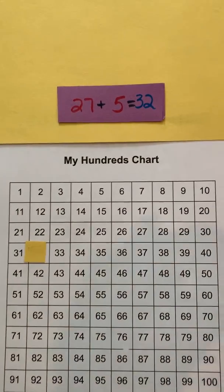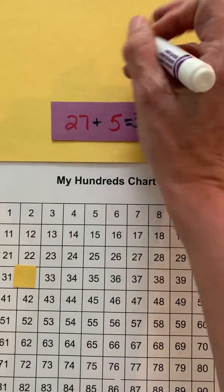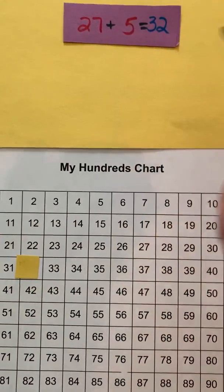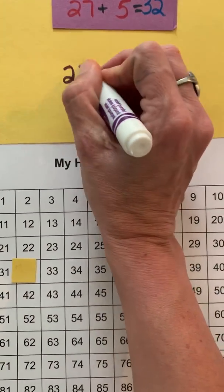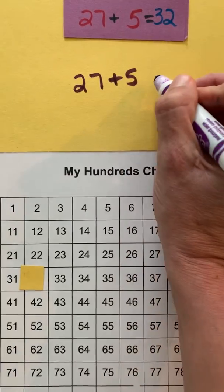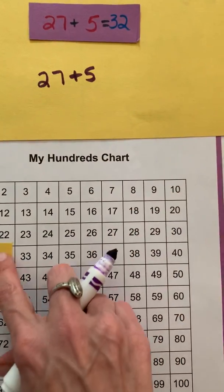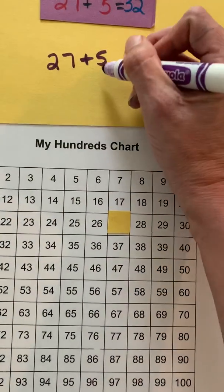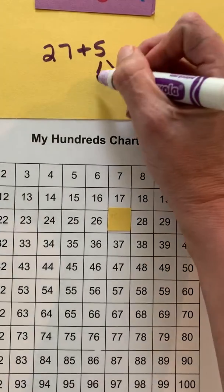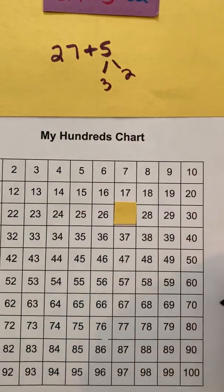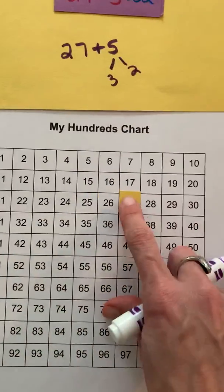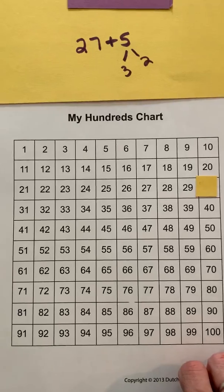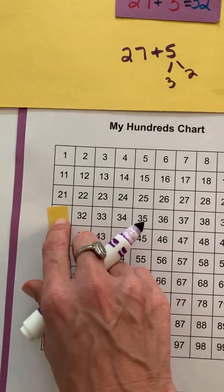Another way that you could look at this is that if I have the number 27 plus five, I can think of, I can begin to realize that if I'm at 27, I am only three away from 30. So I could break this five into three plus two. So then I know if I add on my three, that's automatically going to take me to 30. And then I just add on two more, 31, 32.